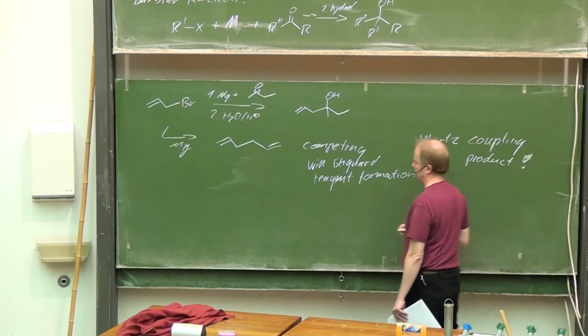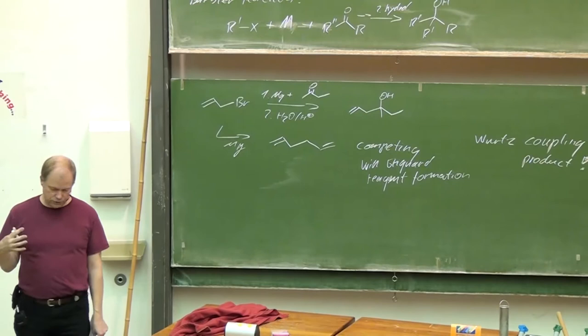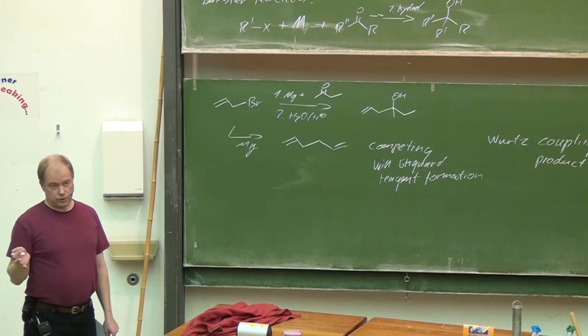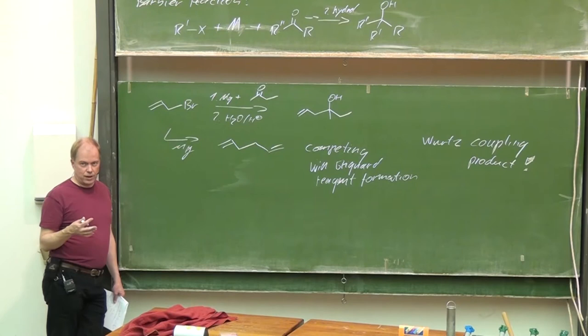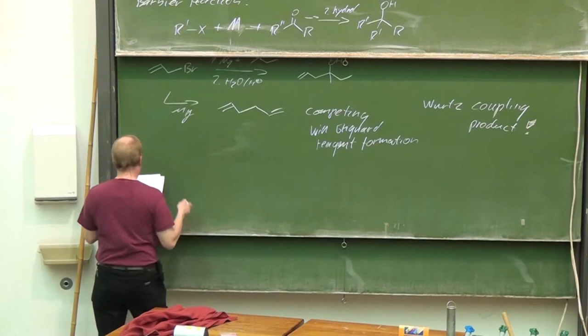This is the Wurtz coupling product. The reason is that the Grignard formation at the magnesium surface is connected with single electron transfer processes. There are radical intermediates, and you have stabilized allylic radicals which have enough lifetime to wait until they get in contact with a second radical, forming that coupling product.